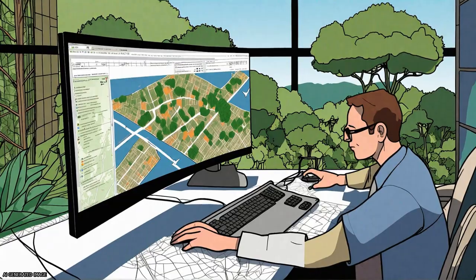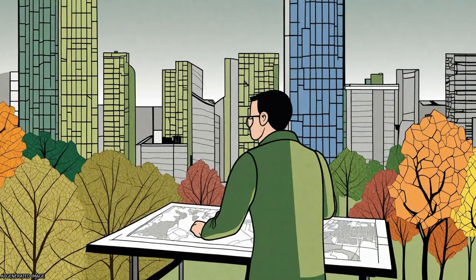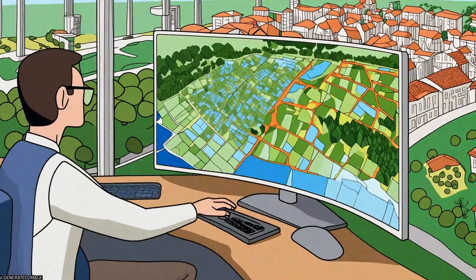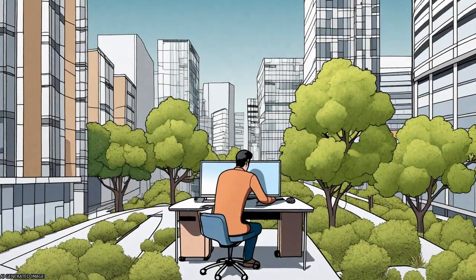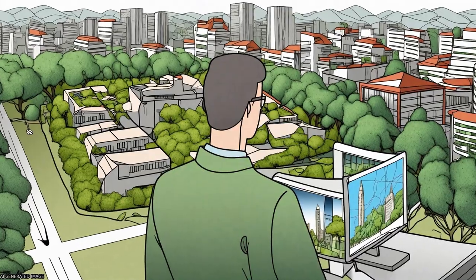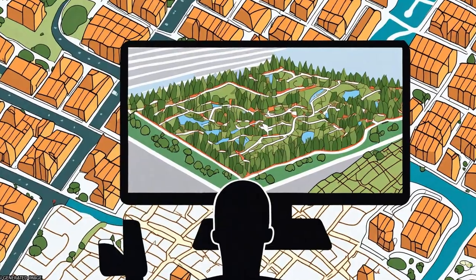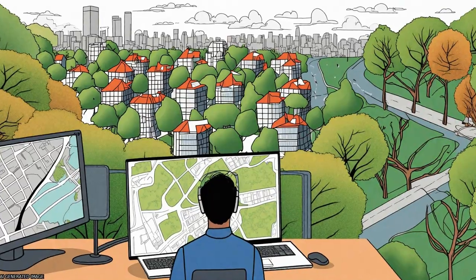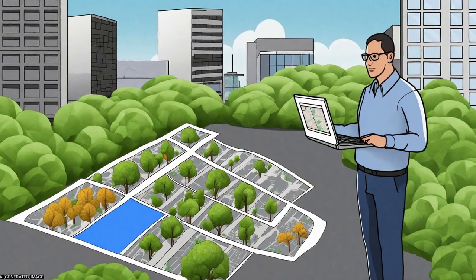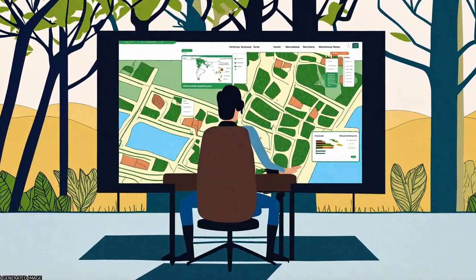This study proposes a hybrid method for accurately classifying land covers in urban vegetated areas using unmanned aerial vehicle (UAV) remote sensing. The method combines random forest and texture analysis to improve classification accuracy beyond traditional maximum likelihood classifiers.